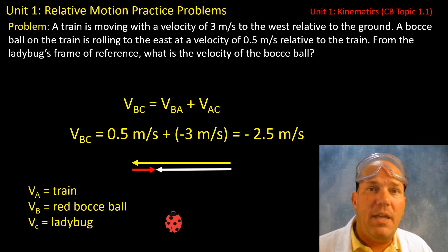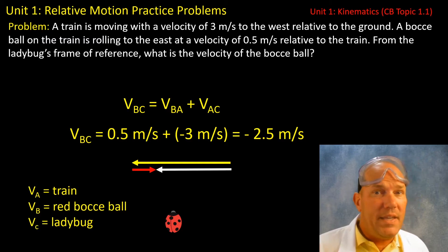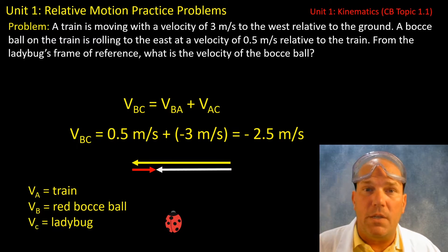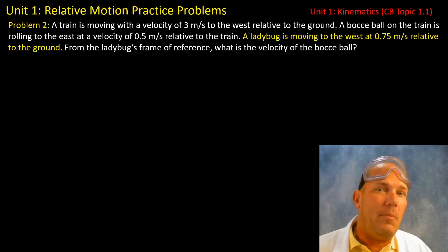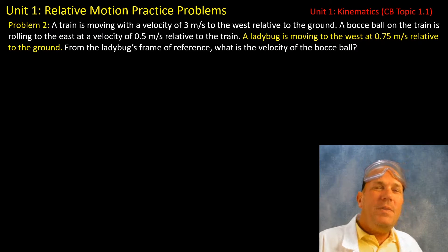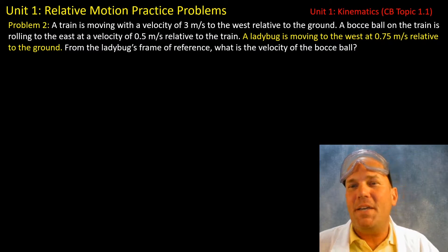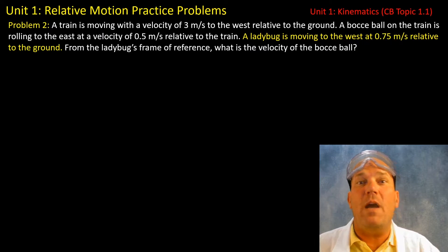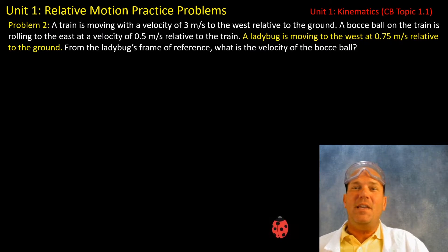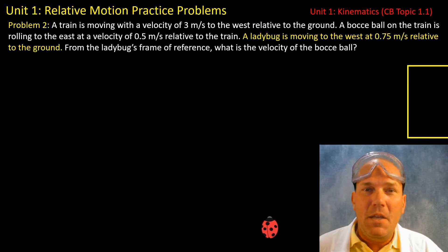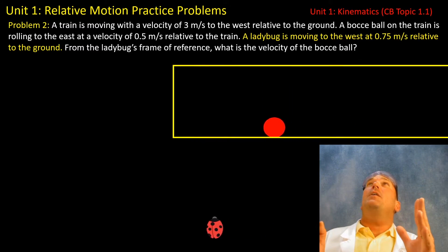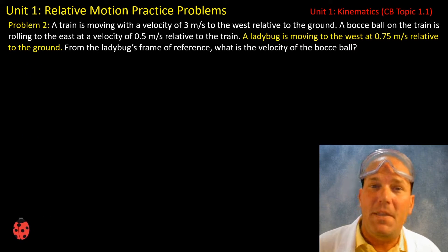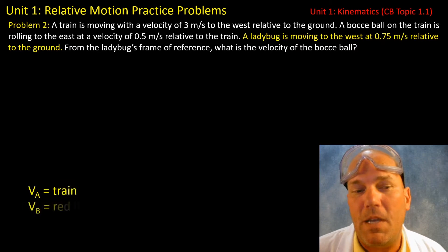In many of my solutions toward the end of Unit 1, I'll actually be using vector addition more than equations because for me it's intuitive — but I want to teach you both. Now here's a little twist: everything's the same except the ladybug is now moving to the west at 0.5 meters per second relative to the ground. We have our ladybug moving to the left, the train and bocce ball moving to the left, but the ball is moving to the east relative to the train. There's quite a bit going on, but we can still use the same approach.